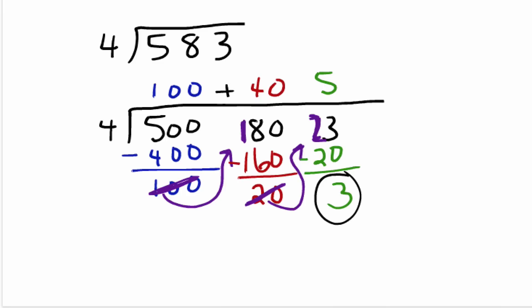So we're going to add these partial quotients up here. So we end up with 145 with a remainder of 3.